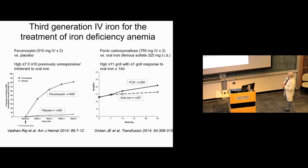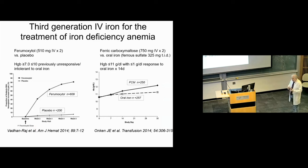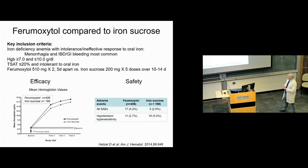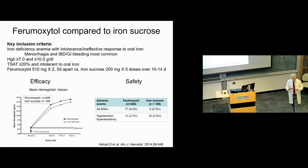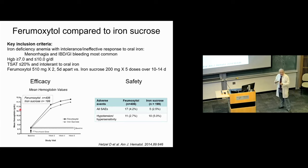Basic studies show that third-generation irons work better than placebo, as expected, and in some settings work about as well as oral iron. Often the problem with oral iron is tolerability rather than efficacy. Comparing different IV irons such as ferumoxytol versus iron sucrose, the hemoglobin responses from baseline are similar. There's not a lot of difference in efficacy between the irons — dosing, ease of administration, and cost are the main drivers of which iron to use.